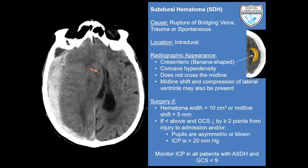We can see subfalcine herniation, indicated by the arrow, which is generally caused by unilateral frontal, parietal, or temporal lobe disease that produces mass effect medially, pushing the ipsilateral cingulate gyrus beneath the free edge of the falx.